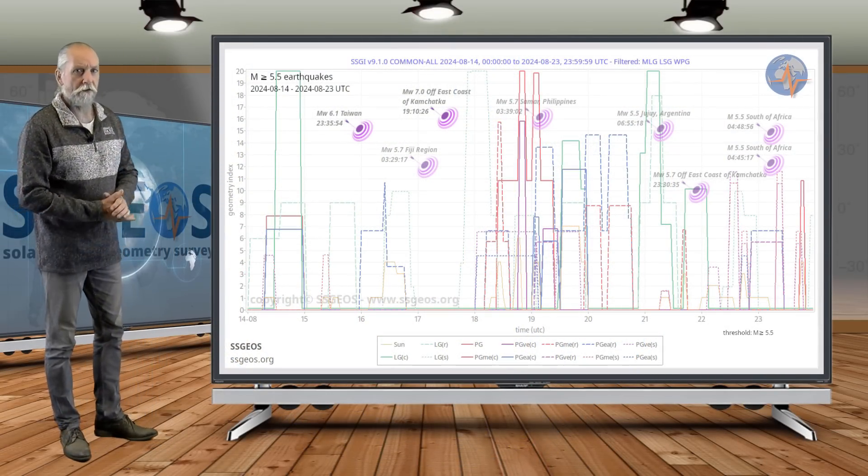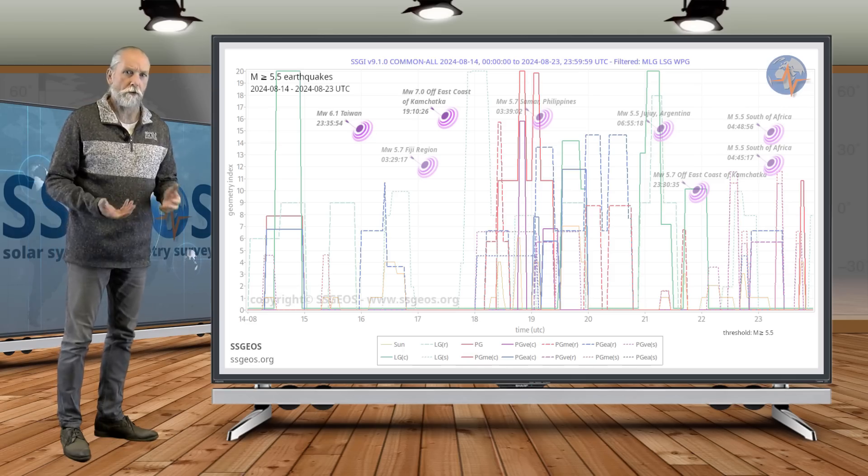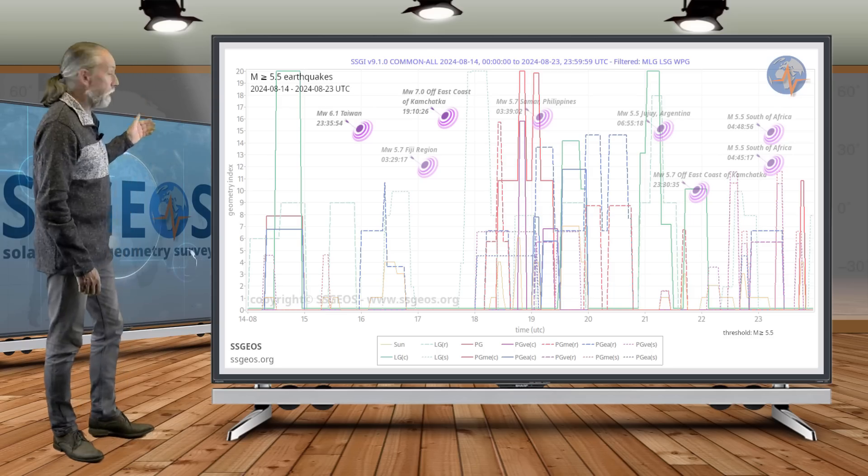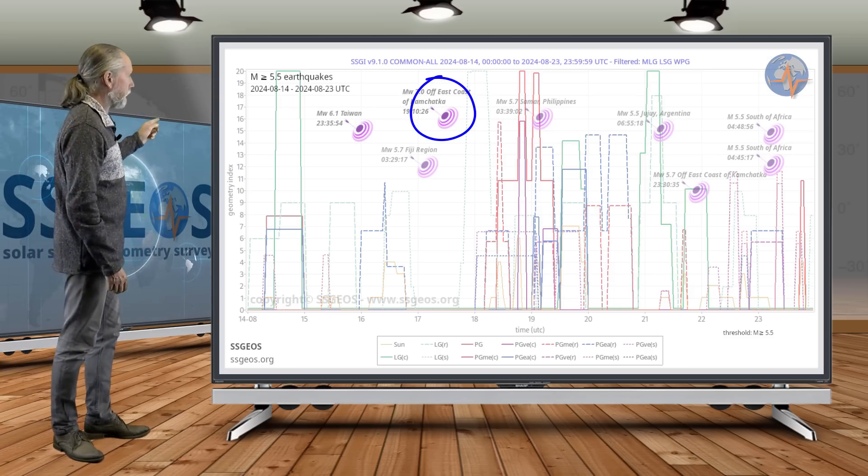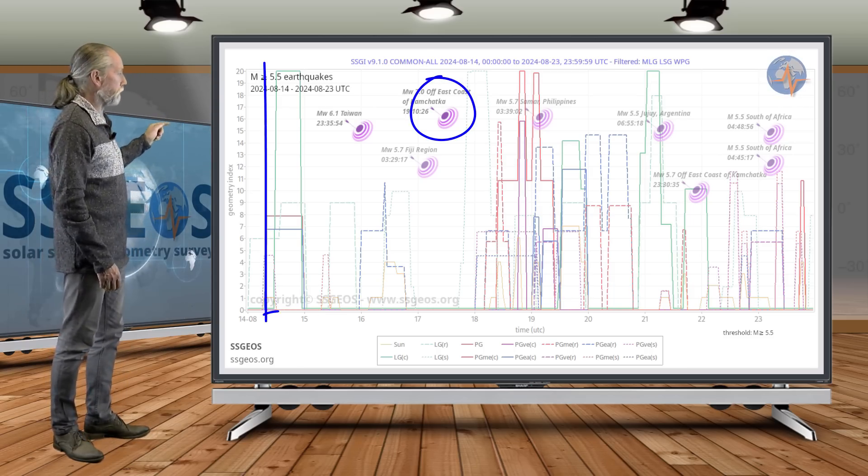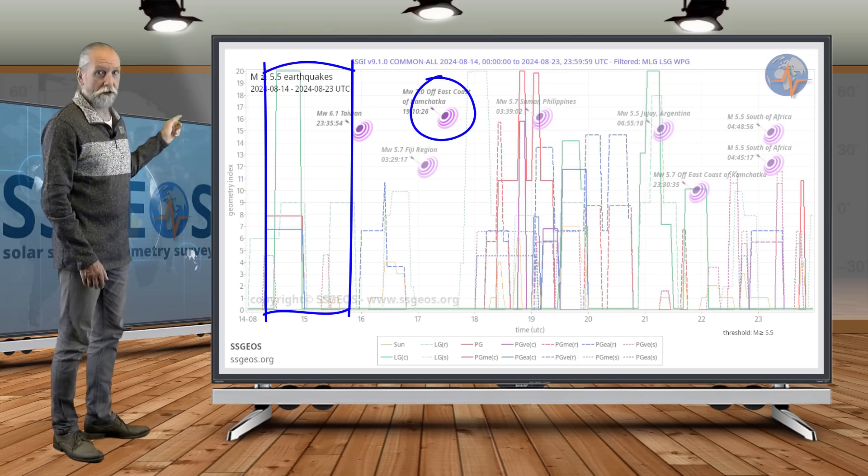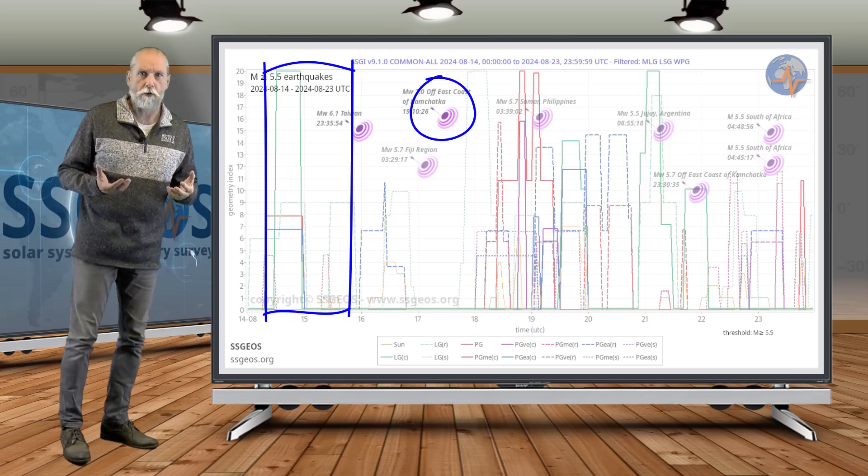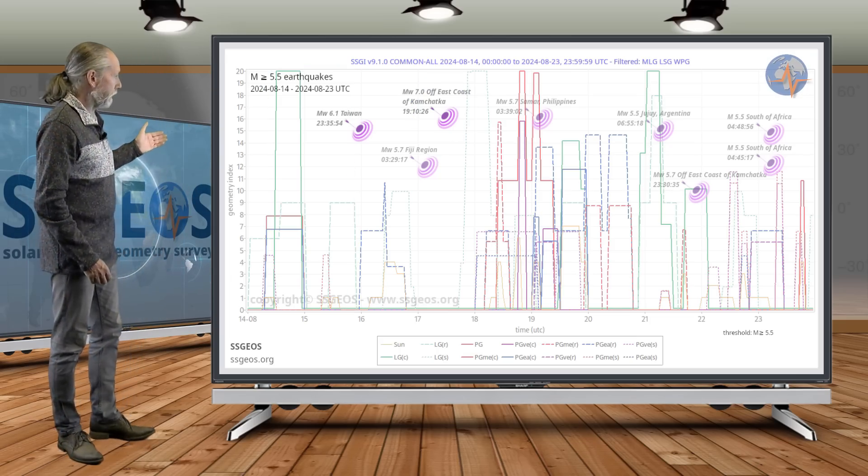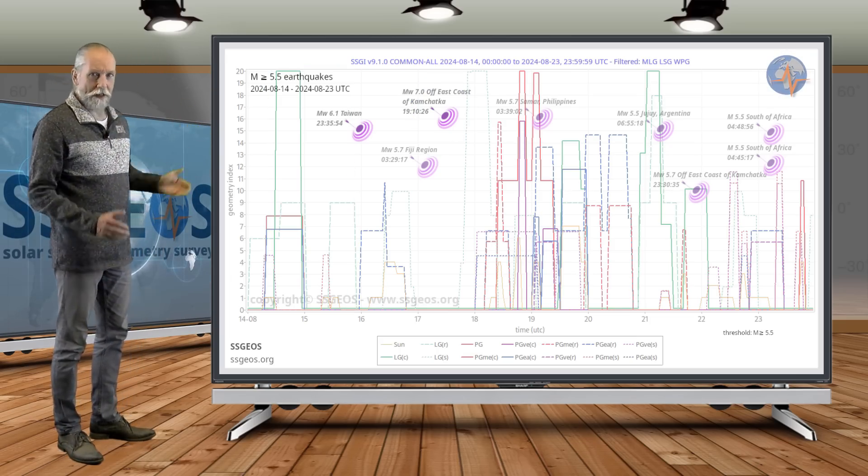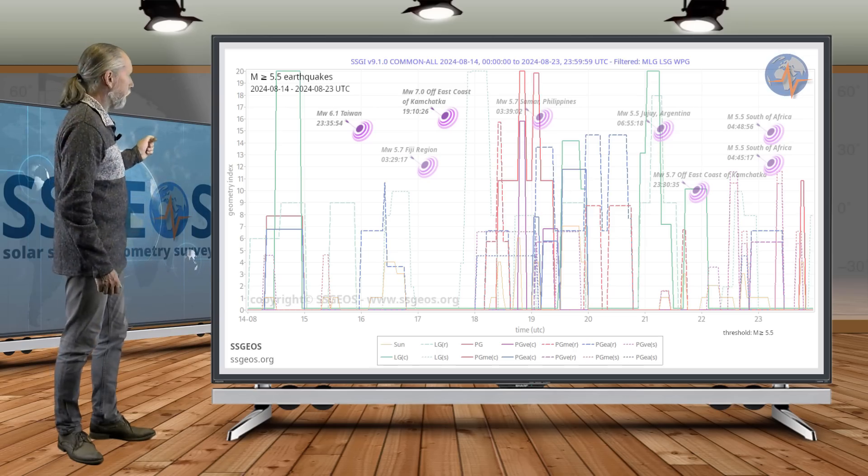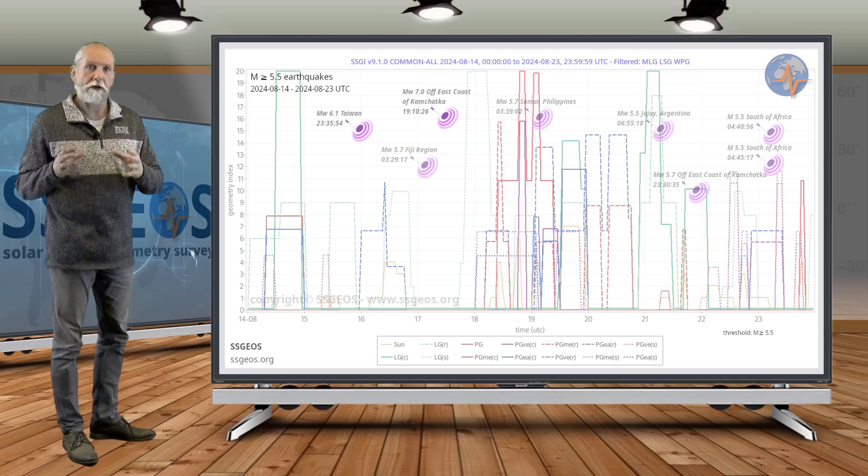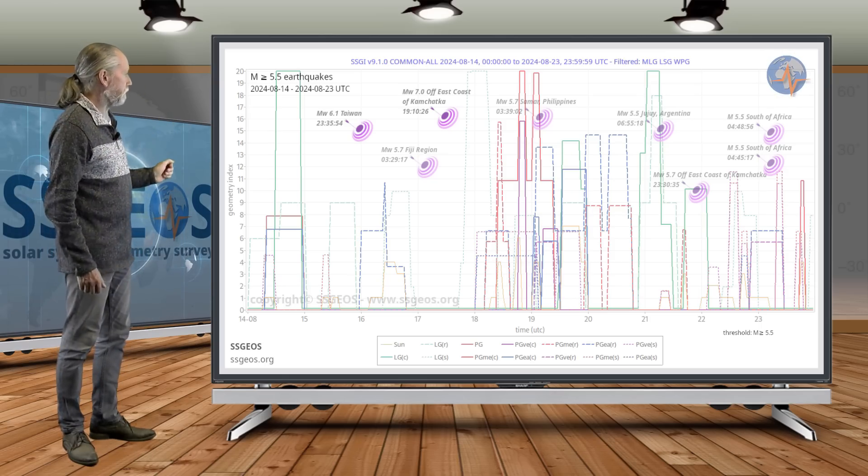We have the SEGI graph here with magnitude 5.5 and larger earthquakes in the previous time frame. We see a magnitude 7 earthquake at Kamchatka, and it comes after the critical lunar geometry, especially on the 14th and 15th. I explained the critical lunar geometry and that there was potential for a magnitude 7 earthquake. I estimated around the 16th. It happened a day later on the 17th. We also had a 6.1 in Taiwan and a 5.7 in Fiji, so some clustering there on the 16th and 17th.